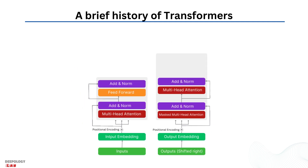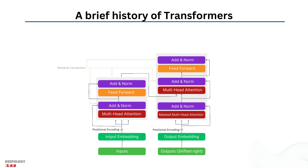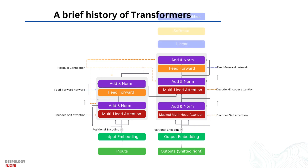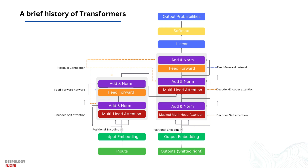Transformers differ from recurrent neural networks in the following ways. First, transformers are non-sequential, in contrast to RNNs that take in sequential data. For example, if the input is a sentence, RNNs will take one word at a time as input. This isn't the case for transformers — they can take all the words of the sentence as input.